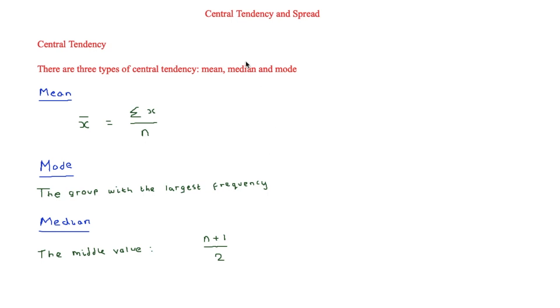This is I'm Stark and in this video we're looking at central tendency and spread. First of all, let's look at central tendency. There are three types of central tendency: this includes the mean, the median, and the mode.